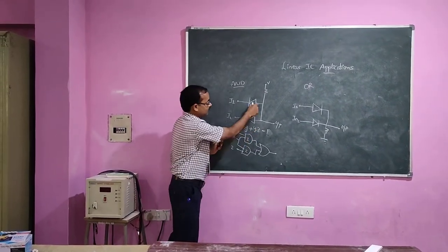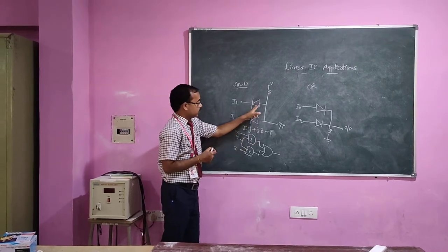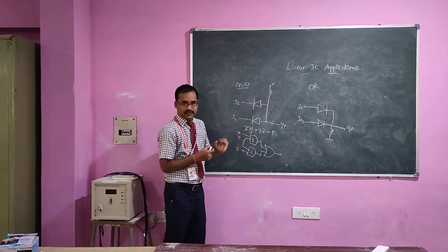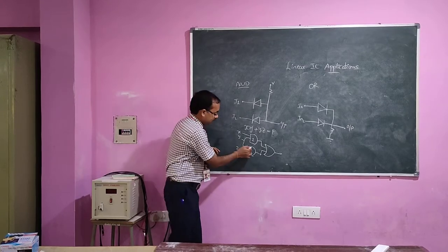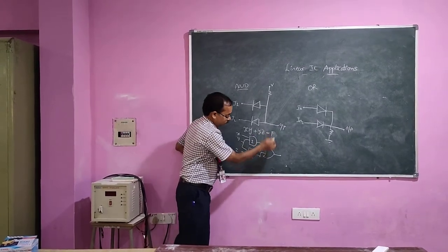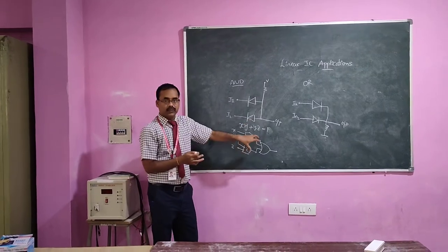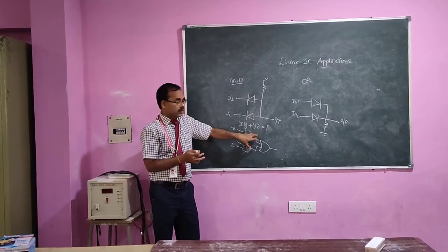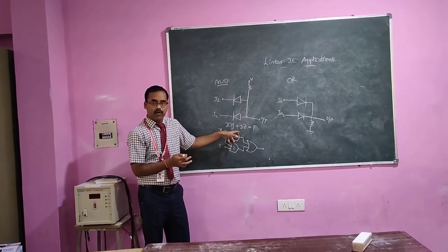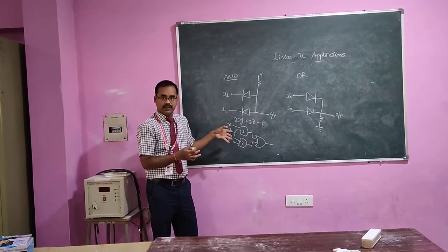Imagine if we replace the symbolic representation with the actual structural form. How many components? Two AND gates — each with two diodes and one resistor. Here again, two diodes and one resistor. And for the OR gate, two diodes and one resistor. That means, in total inside the circuit, I require six diodes and three resistors. How much space will that occupy?